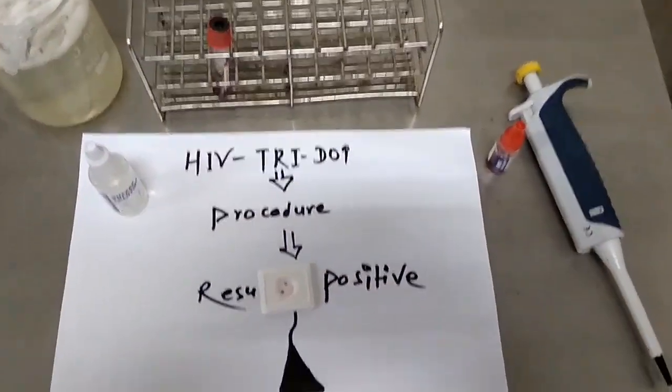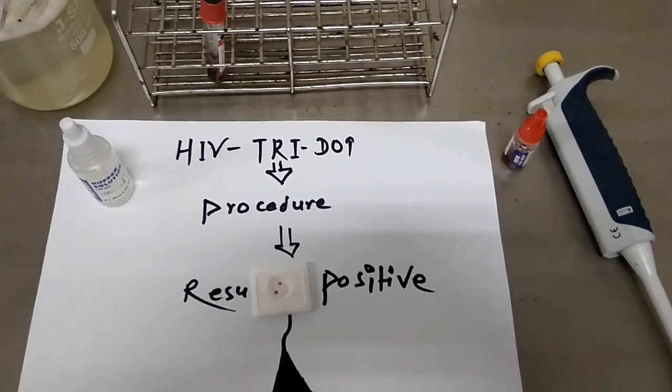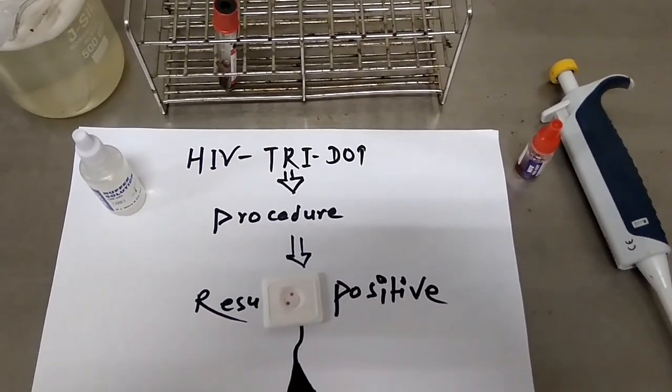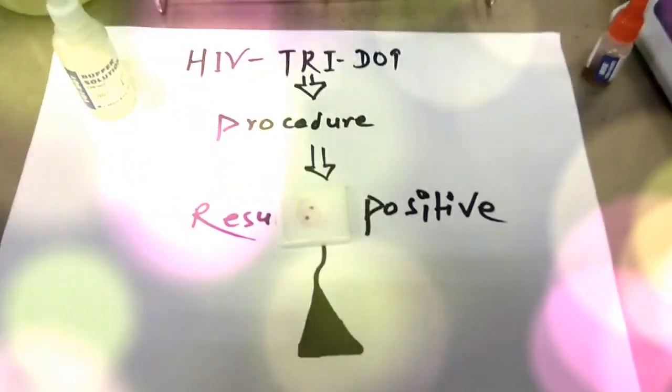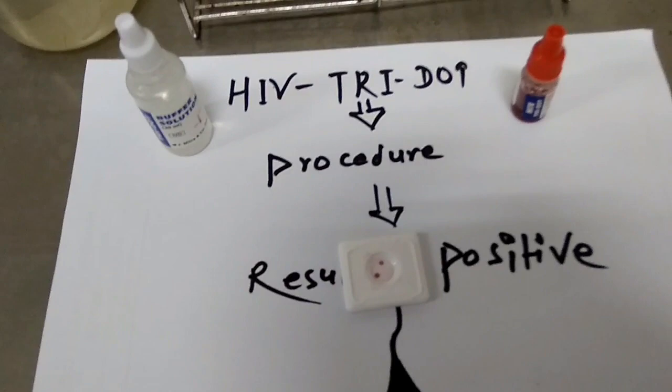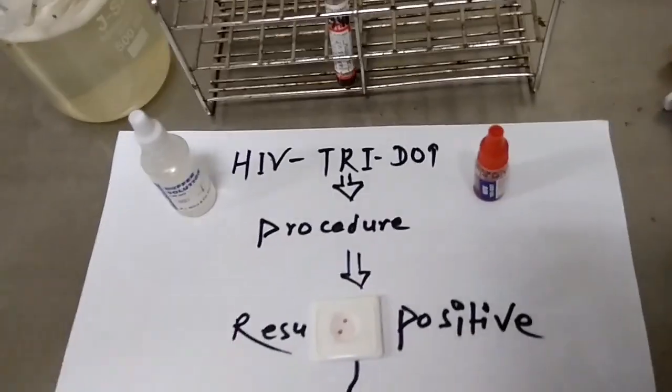Before ending, we want to note that we can't definitively say the test is positive or negative by this test alone, because the confirmatory test for HIV is Western blot. For this reason, it's better to write 'reactive' or 'non-reactive' rather than positive or negative.